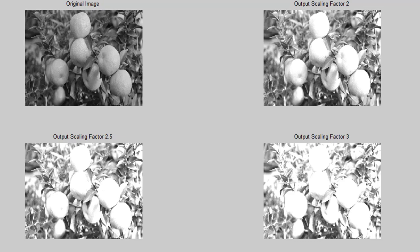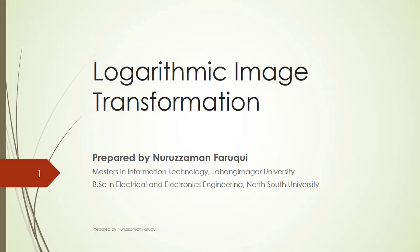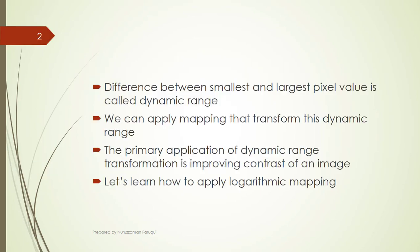So how is this program actually working? To understand, let's take a look at the theoretical concept. The difference between smallest and largest pixel value of an image is called dynamic range. We can apply logarithmic function within this dynamic range. The primary application of dynamic range transformation is improving the contrast of an image.